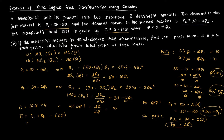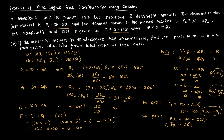So that's 30 times 4 for R1, plus 20 times 5 for R2, minus the cost of 6 plus 10 times Q, where Q is Q1 plus Q2 equals 9. That gives 120 plus 100 minus 6 minus 90, which simplifies to a total profit of 124.